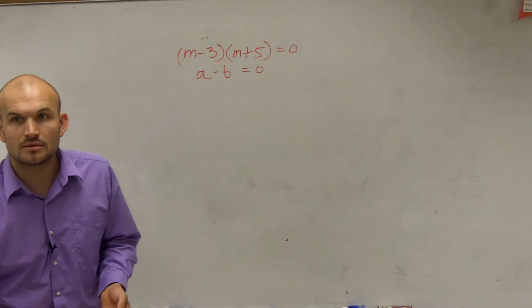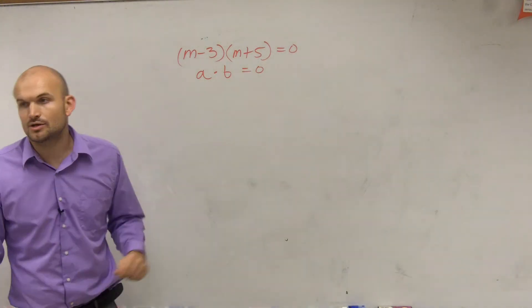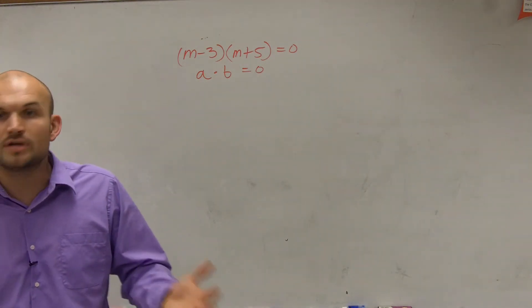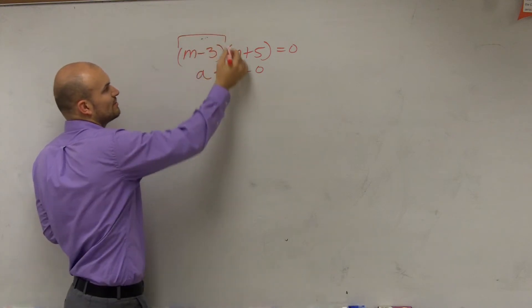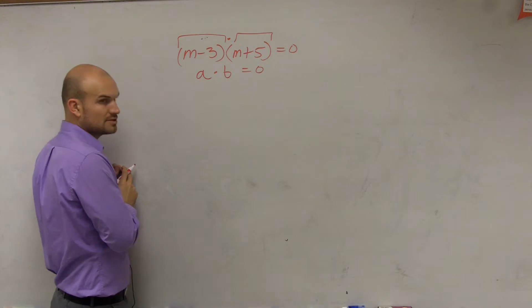However, in this case, if you just go ahead and take a look at this, what you guys can see is what are my two factors? What are my two numbers that I'm multiplying? Well, I'm multiplying m minus 3 times m plus 5. Those are what I'm multiplying.